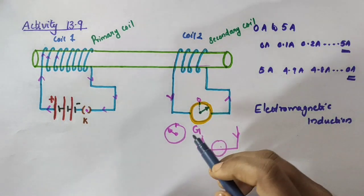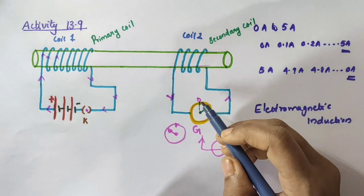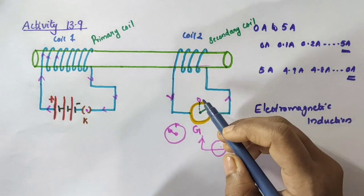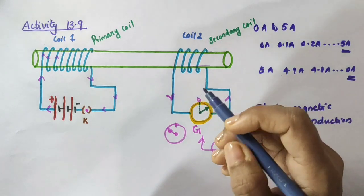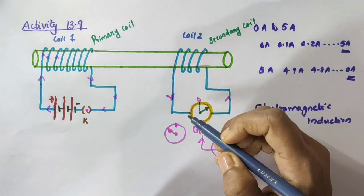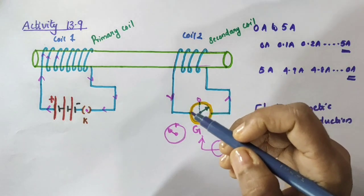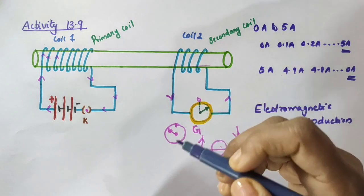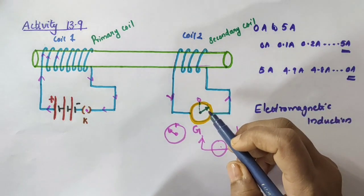This process by which a changing magnetic field in a conductor induces a current in another conductor is called electromagnetic induction. In practice, we can induce current in a coil either by moving it in a magnetic field or by changing the magnetic field around it. Moving the coil in the magnetic field is actually the most convenient in most situations.